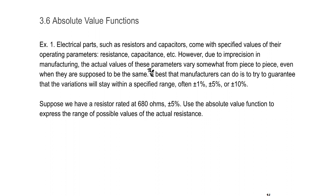So suppose we have a resistor rated at 680 ohms, plus or minus 5%. Use the absolute value function to express the range of possible values of the actual resistance. First, we're going to use R to be our resistance. If we want values to be close to or within a certain distance of 680, the absolute value of R minus 680 is the distance between the actual resistance and 680 ohms.